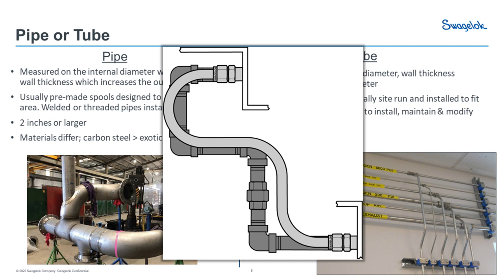Pipe is typically measured on the internal diameter with a schedule of wall thickness, which increases the outside diameter. So a one-inch pipe typically is a one-inch bore with the schedule of wall thickness adding to the outside diameter. Tube, conversely, is pretty much the complete opposite — a one-inch tube is going to be one inch on its OD and that wall thickness is going to encroach on the internal diameter. Pipe is typically made of spools that can be welded in a workshop or threaded together for installation on site. Tubing is typically site-run, easy to bend and install, and is two inches or smaller — quite often nowadays one inch or under.